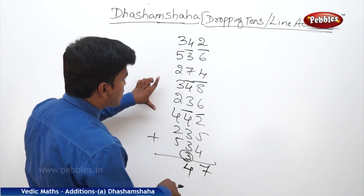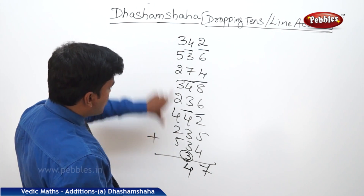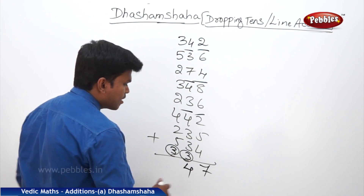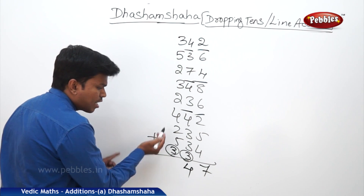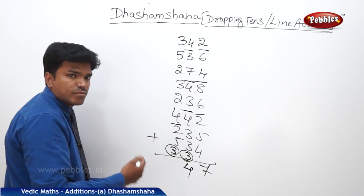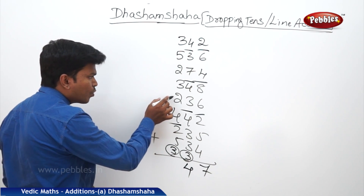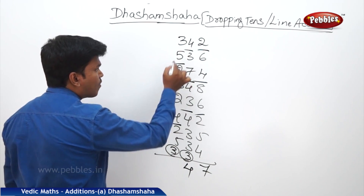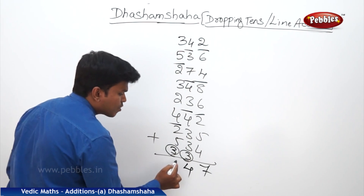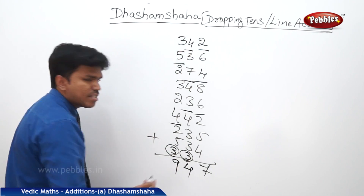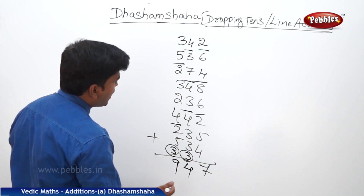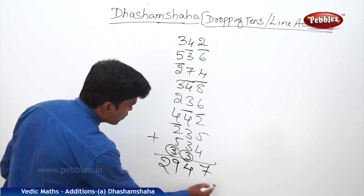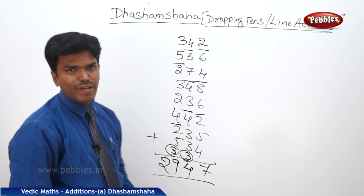How many times have we dropped? Fastly — 3 tens. Carry to next line. Start this line: 3, 5 → 8. 8, 2 → 0 (drop 10). Start freshly. 4, 2 → 6. 6, 3 → 9. 9, 2 → 1 (drop 10). 1, 5 → 6. 6, 3 → 9. Finally, remaining is 9. How many times dropped? This line is 2 only. So the answer is 2, 9, 4, 7.